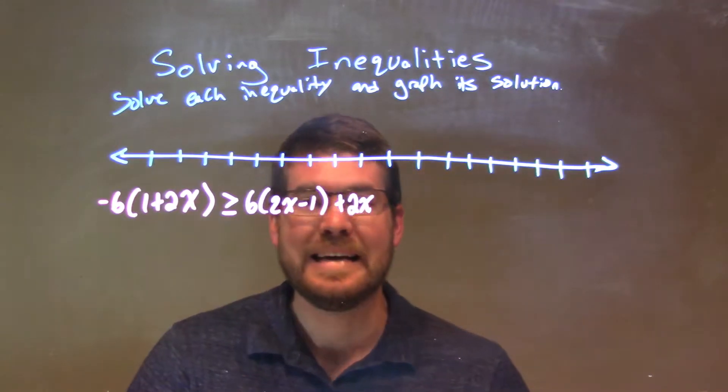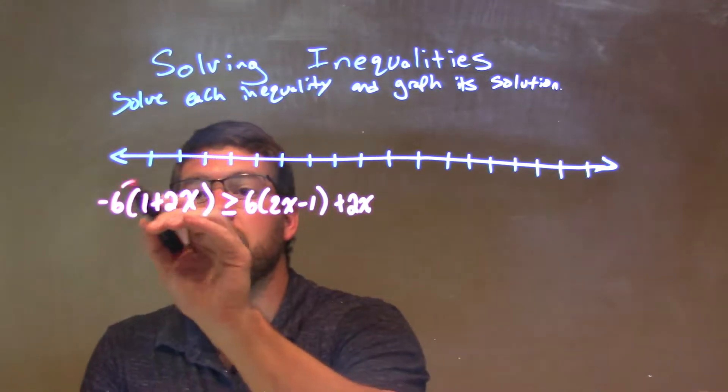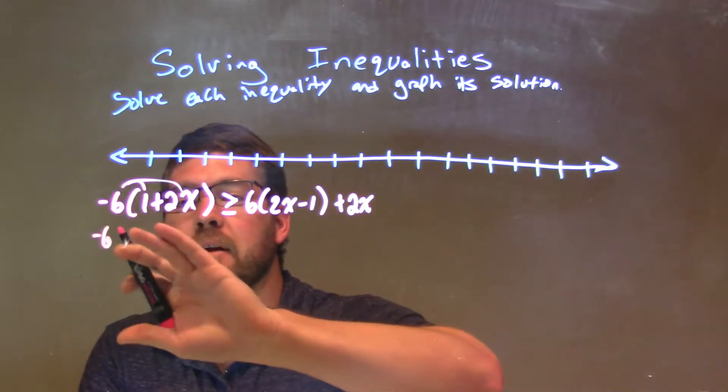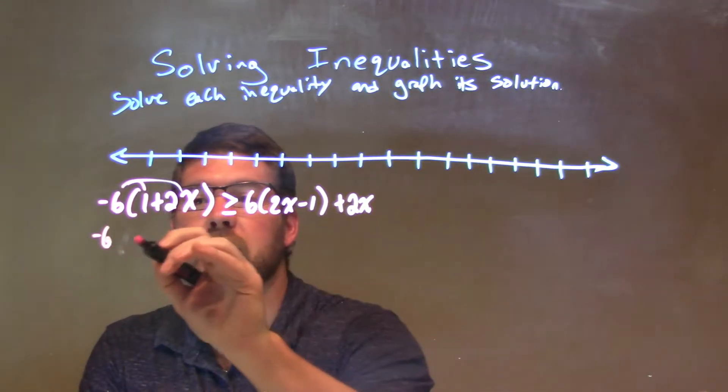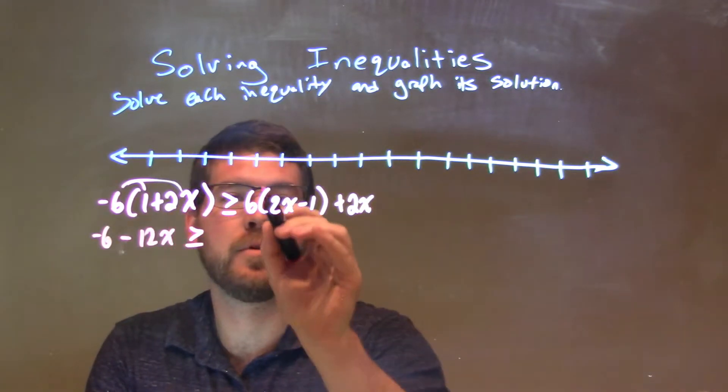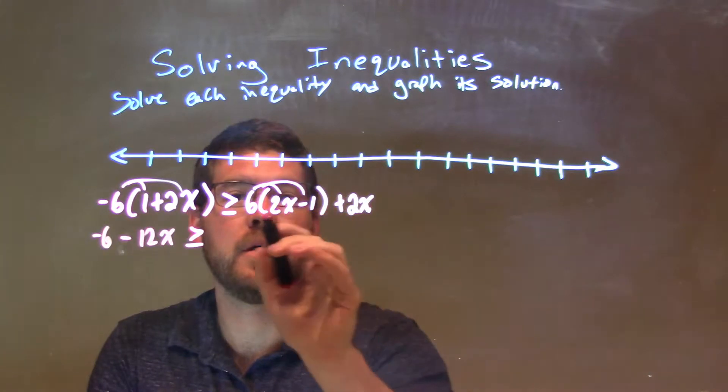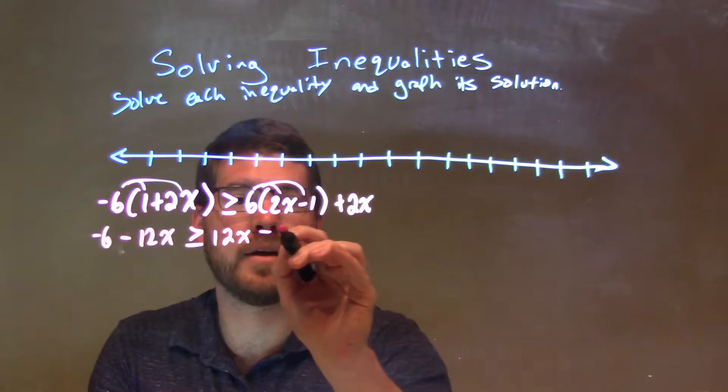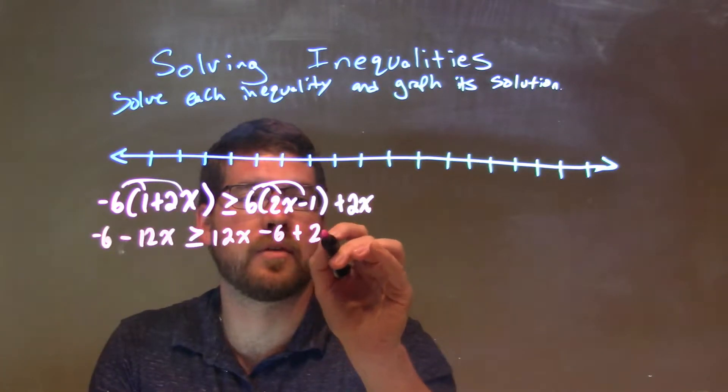First thing I want to do is simplify each side. I'm going to distribute the negative 6 across, and we're going to get negative 6 minus, the negative 6 times 2x is a minus 12x. That's going to be greater than or equal to, we'll distribute this 6 across now. 6 times 2x is 12x, and 6 times minus 1 is a minus 6, and then we have a plus 2x left over.